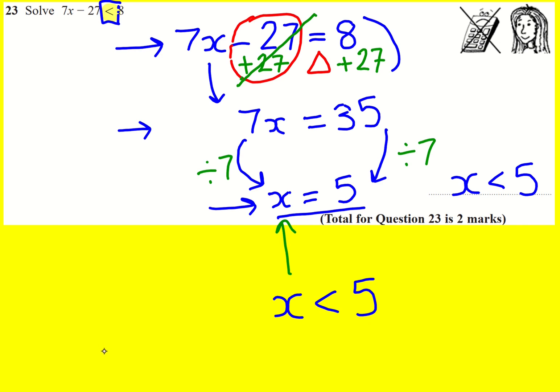Just as a little extra bit of information, not necessary for this question but just to remind you of other things that you might see in this topic: x is less than 5 can be shown on a number line.